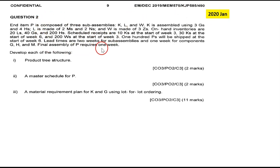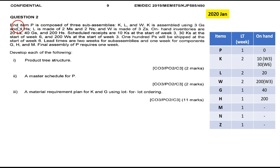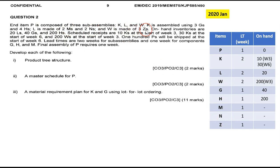There's no table given, so we need to extract information from the paragraph into a table. We read line by line. Item P is the parent, the finished product we want to ship out. They have sub-assemblies K, L, W. K uses 3G and 4H, so they have G and H. Then they have M and N, and Z.